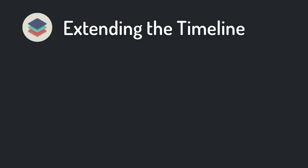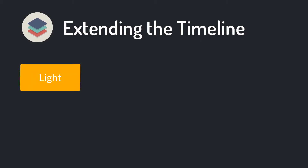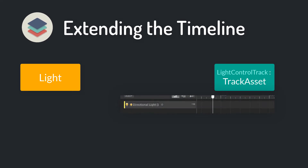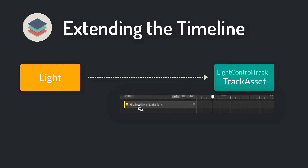For example, we want to change the lights in our cutscenes, so we need to make the light component animatable in the timeline. The first step is to create a script which inherits from TrackAsset. The TrackAsset represents a track in the timeline. Now you need to tell the track asset that its binding type is the light component, which you can specify with the TrackBindingType attribute.